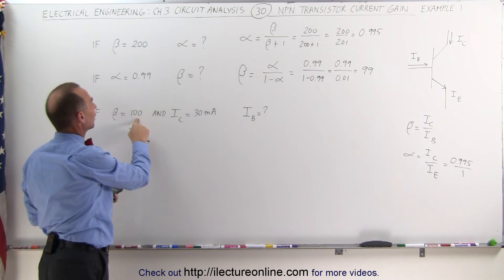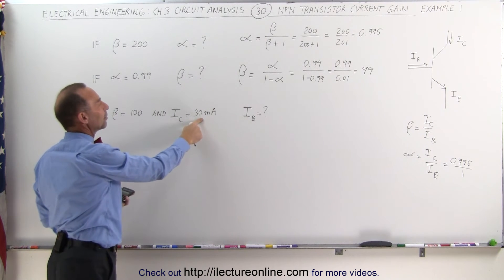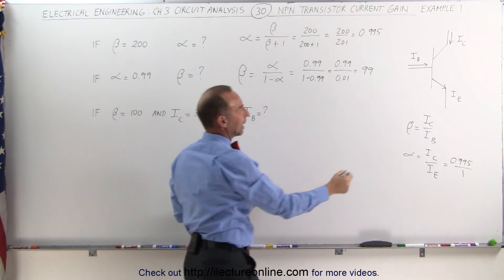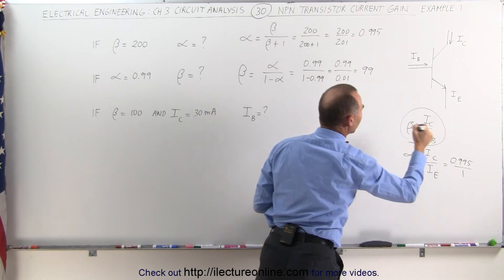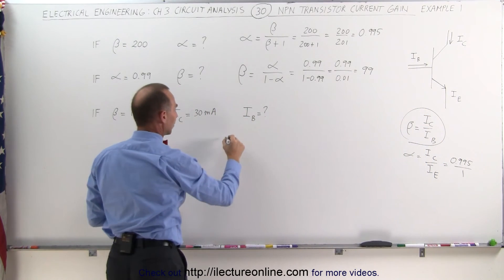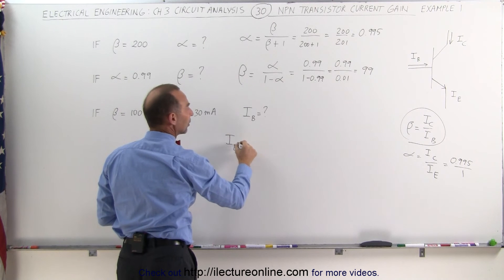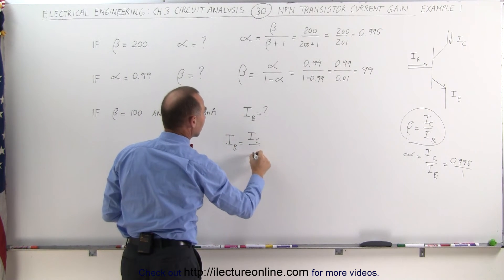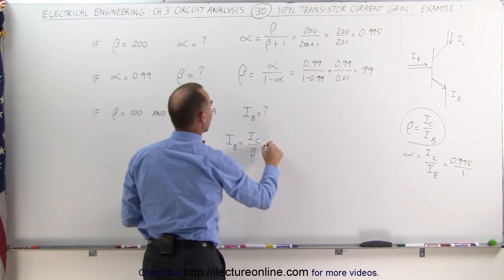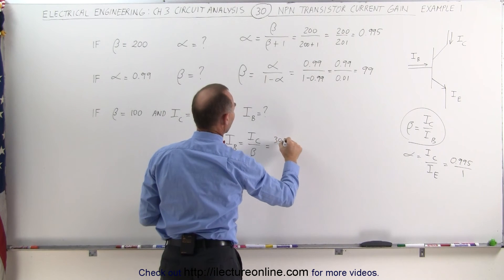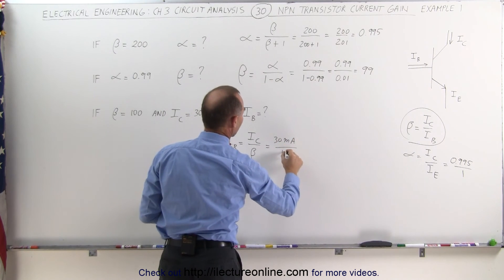And finally, if beta is equal to 100 and the collector current is 30 milliamps, what is the base current? Again, we come up to this familiar relationship now. So we can say that the base current, I sub B, is equal to the ratio of the collector current divided by the current gain. In this case, that would be 30 milliamps divided by 100.